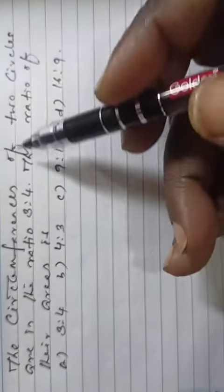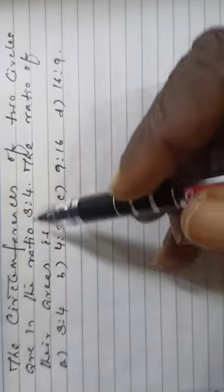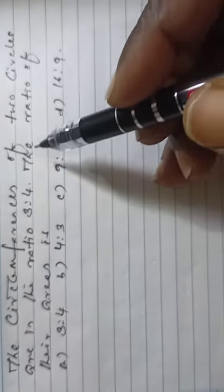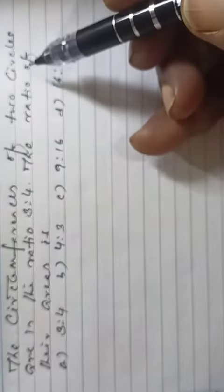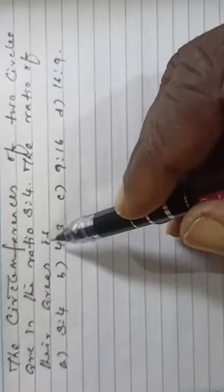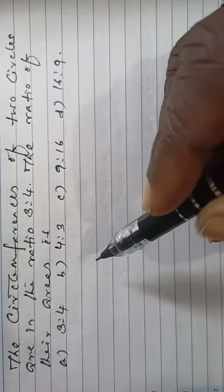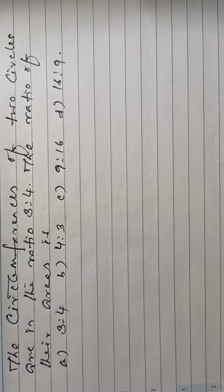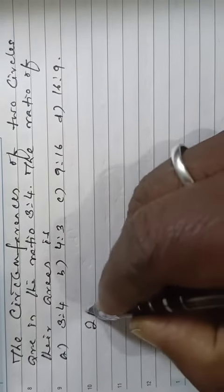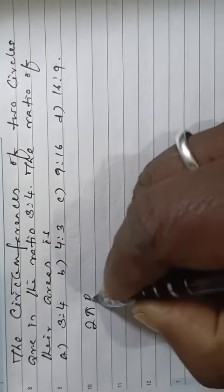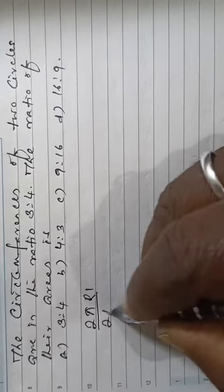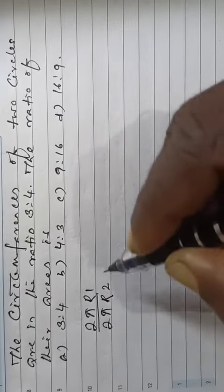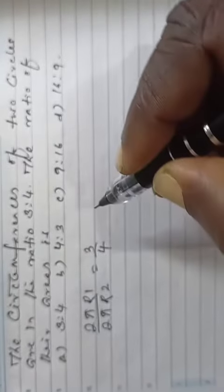The circumferences of the two circles are in the ratio 3 is to 4. The ratio of their areas is — options are here. So now, that is 2πR1 by 2πR2 is equal to 3 by 4, as given.